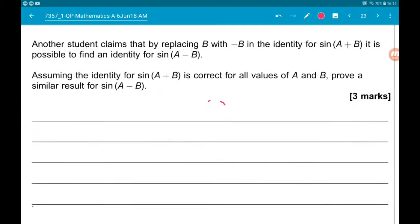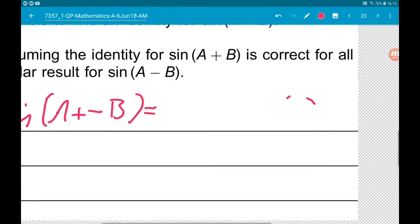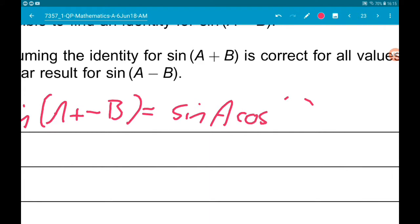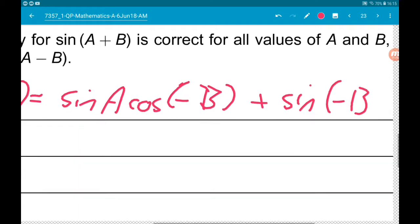Then for part D, another student claims that by replacing B with minus B in the identity for sin of A plus B, it is possible to prove an identity for sin of A minus B. Assuming that the identity for sin of A plus B is correct for all values of A and B, prove a similar result for sin of A minus B. So sin of A plus minus B is going to be sin of A cos of minus B, plus sin of minus B, times cos of A.